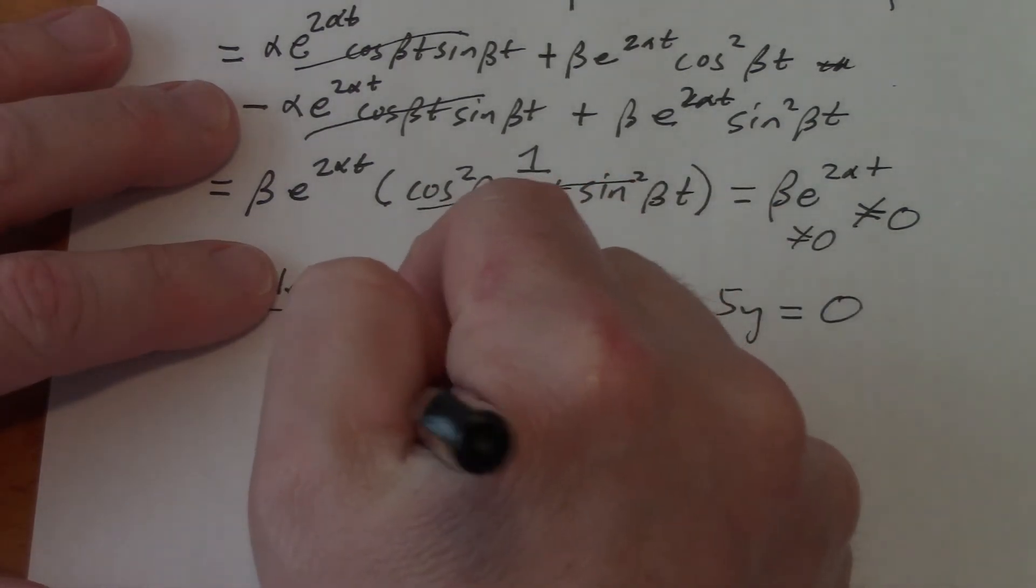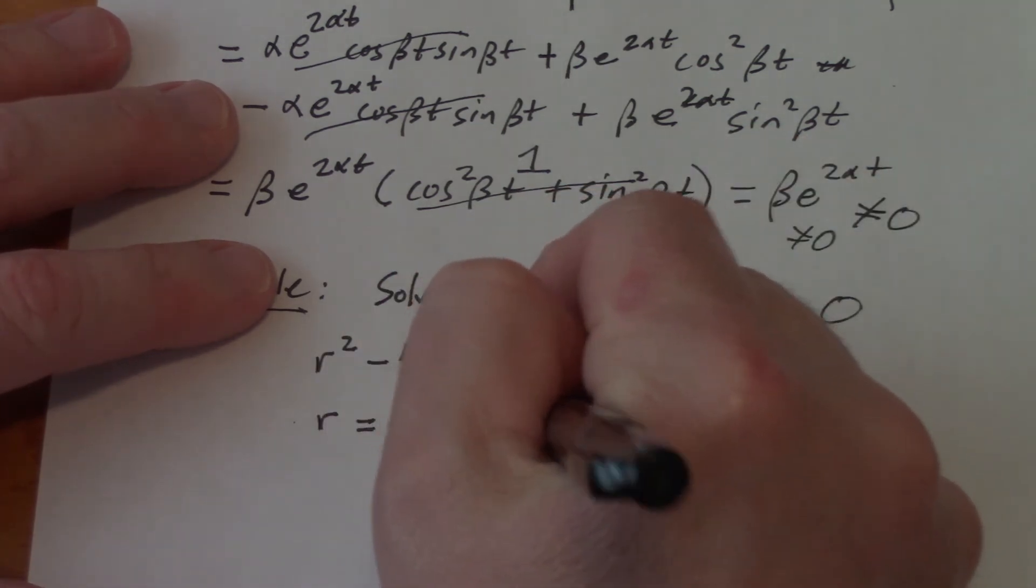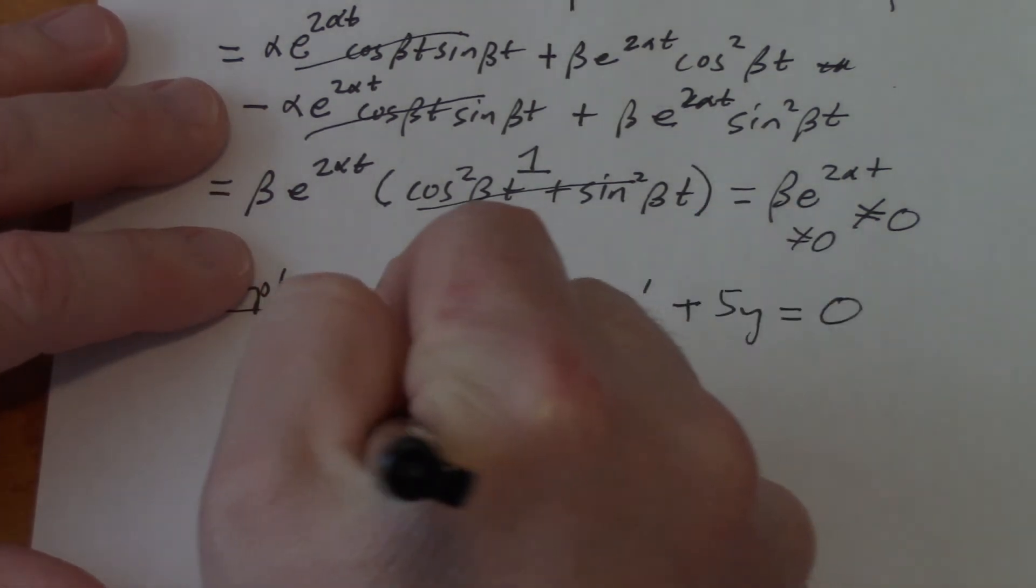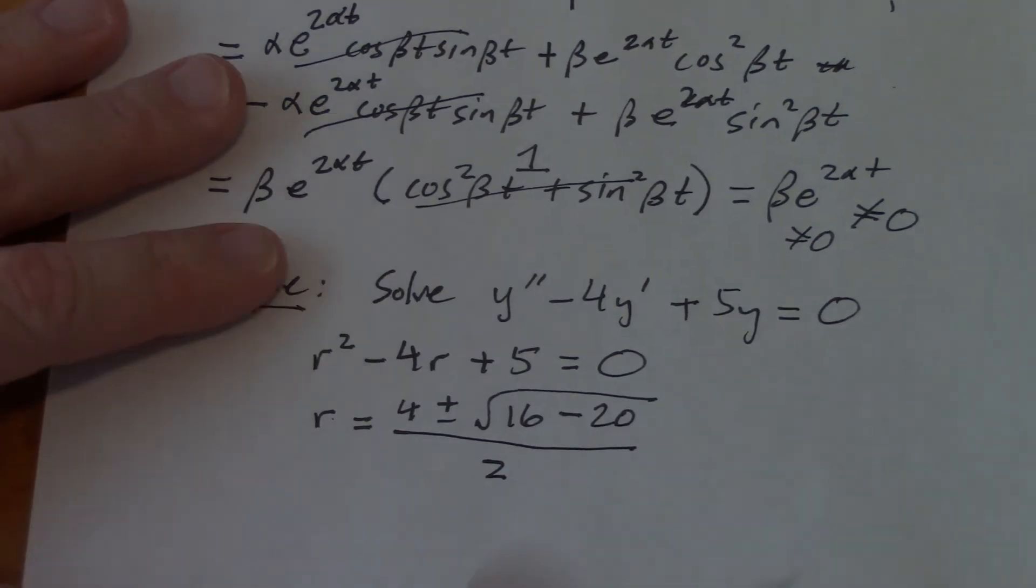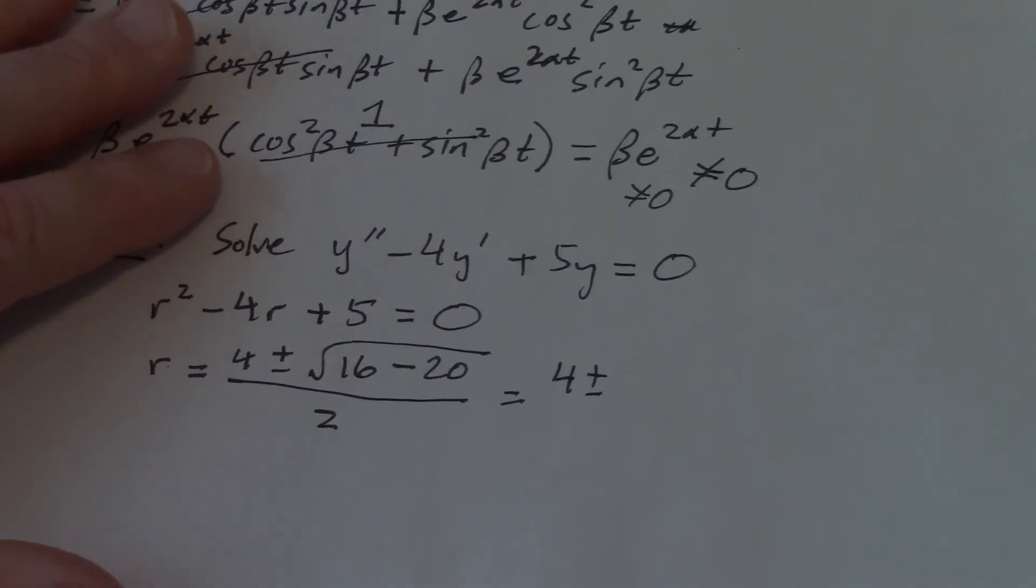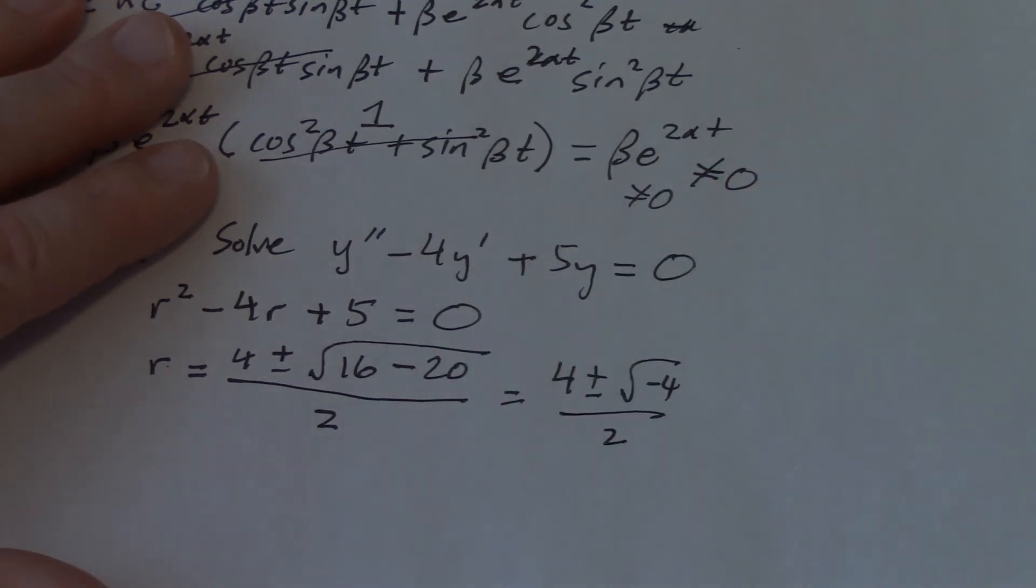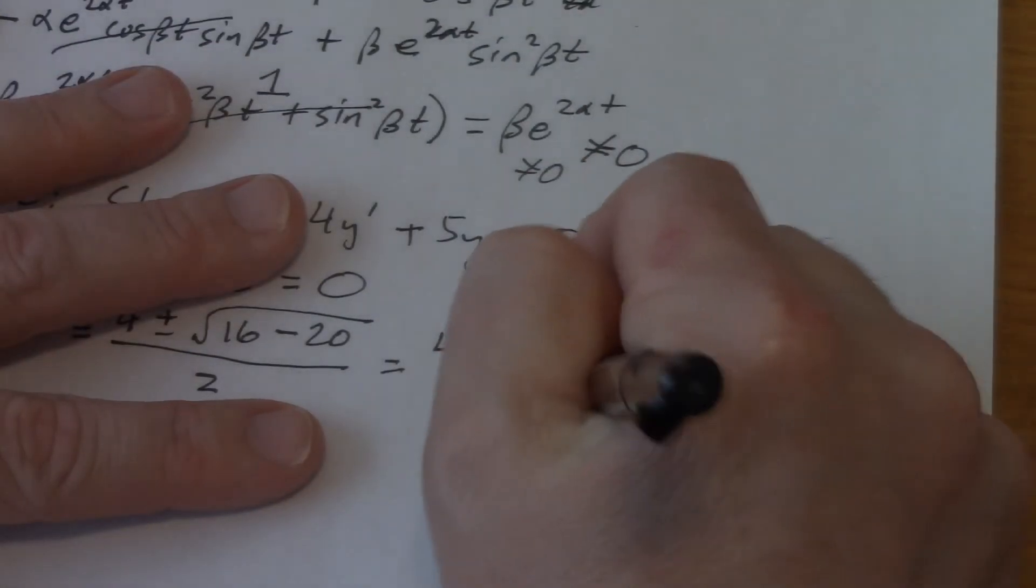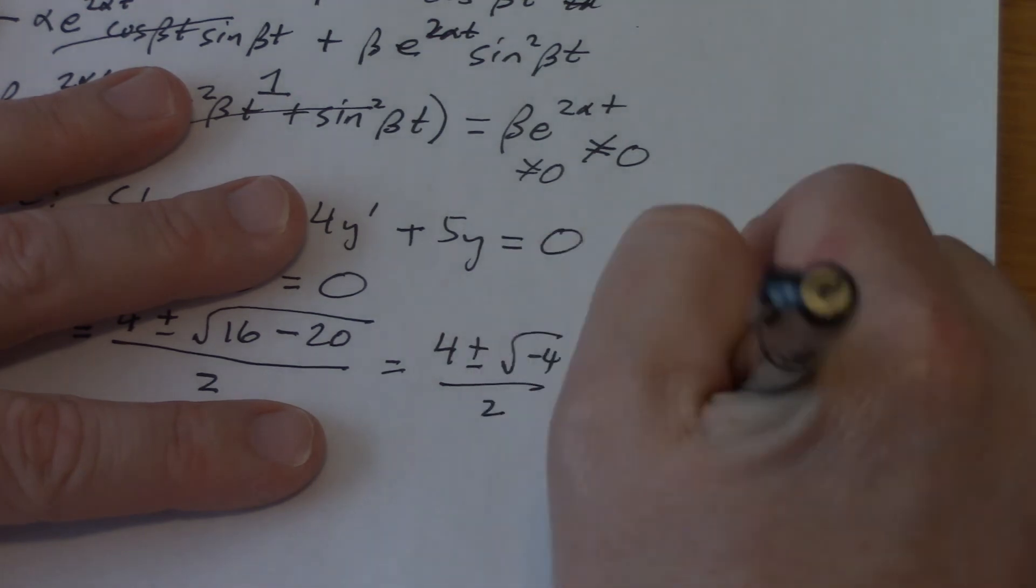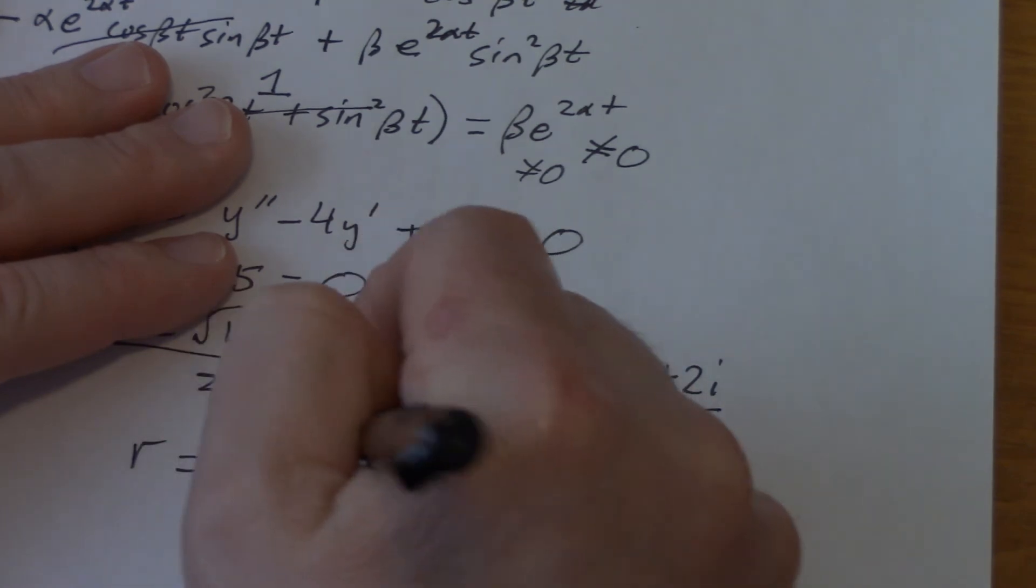We know that we need the quadratic formula. Minus b is going to be 4 plus or minus b squared is going to be 16 minus 4 times 5 times 1, minus 20, all over 2 times a, which is 2. That's 4 plus or minus root negative 4 over 2. And that is 4 plus or minus, the square root of 4 is 2, the negative makes an i. And then you have to divide both by 2.